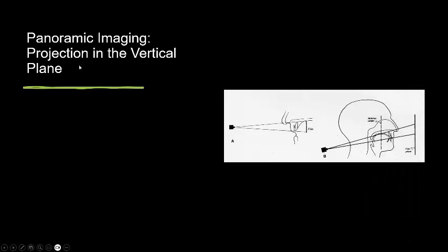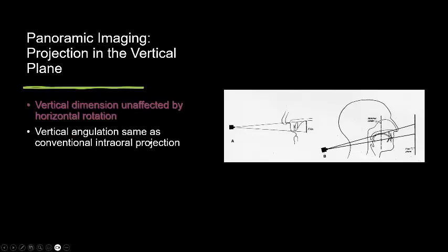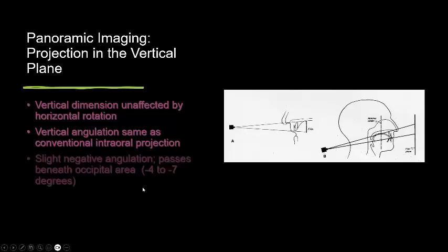Regarding panoramic imaging projection in the vertical plane: vertical dimensions are unaffected by the horizontal rotation. Vertical angulation is seen as in conventional intraoral projection, with slight negative angulation passing beneath the occipital area — approximately minus 4 to minus 7 degrees.